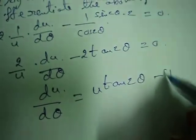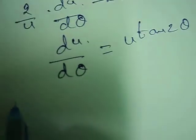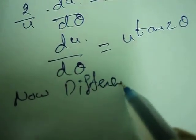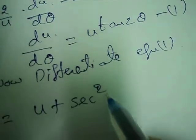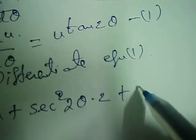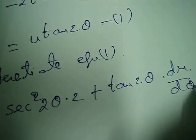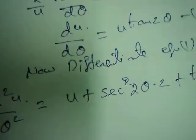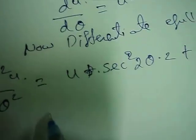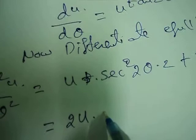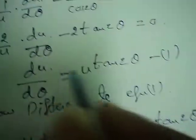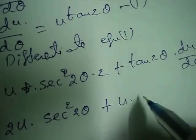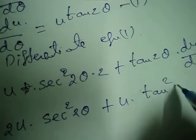Now differentiate again. d²u/dθ² = u·sec²(2θ)·2 + tan(2θ)·du/dθ. Substituting du/dθ from equation 1, this becomes 2u·sec²(2θ) + u·tan(2θ)·tan(2θ), which equals 2u·sec²(2θ) + u·tan²(2θ).